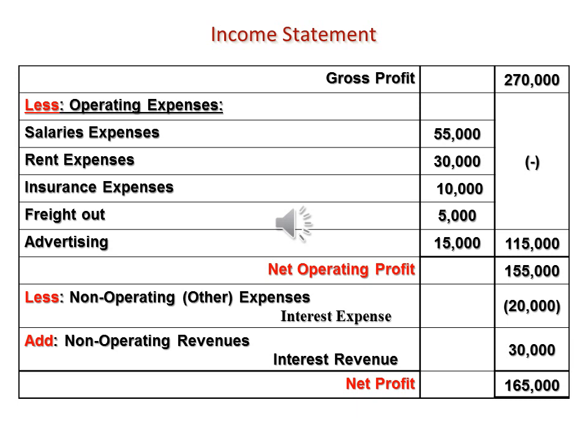Income statement continued: Gross profit calculated before — $270,000. Less operating expenses: salary expense $55,000, rent expense $30,000, insurance expense $10,000, freight out $5,000, advertising $15,000 — total operating expenses $115,000. Subtracted from gross profit gives net operating profit of $155,000. Less non-operating expenses — interest expense negative $20,000. Add non-operating revenue — interest revenue $30,000 — then net profit amounts to $165,000.